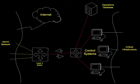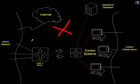Here we see a segmented network. A layer 3 core switch separates the admin, highlighted in yellow, and critical systems, highlighted in red, into two VLANs. A VLAN access control list prevents traffic from flowing to the critical systems from the admin VLAN. The critical systems have no access to the internet, and we are blocking all traffic that goes from the admin systems to the control systems.